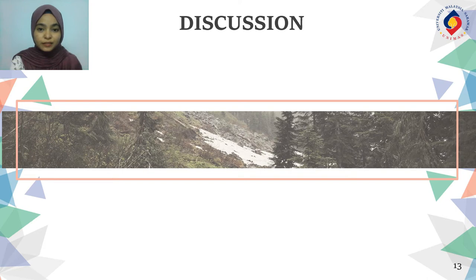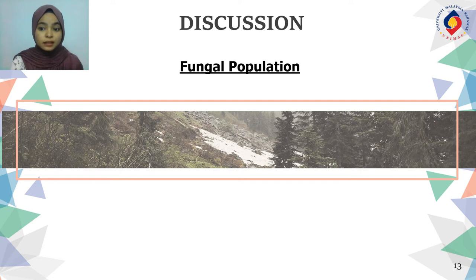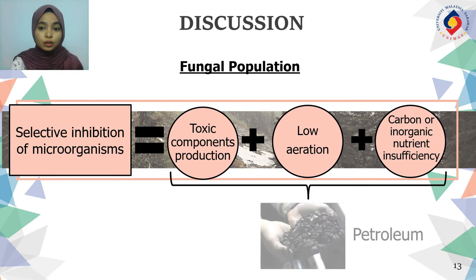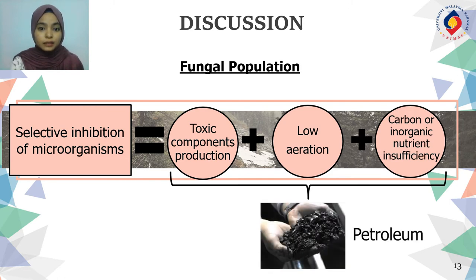I'm Nur Anis Afrika and I will continue on the discussion part. As mentioned in the result section, fungal population from week 0 to week 1 decreased. This decreased pattern can be related to the selective inhibition of members of the microbial community. Petroleum in the contaminated soil is the main cause, where it produces toxic components such as heavy metals. The presence of petroleum may also contribute to low aeration and insufficient carbon or inorganic nutrient balance of indigenous population.